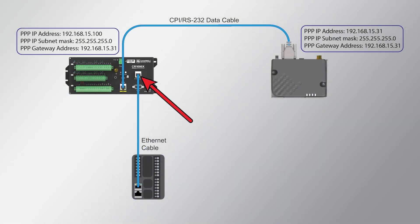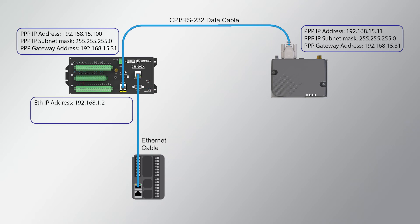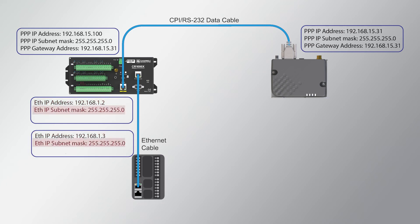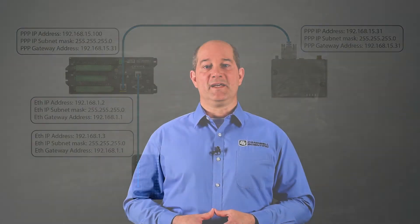Next, a different IP stack is configured on the CR1000X's Ethernet interface. The CR1000X is connected via Ethernet to a generic Modbus Programmable Logic Controller, or PLC. The CR1000X is given an address of 192.168.1.2, while the PLC is given 192.168.1.3. The subnet mask remains 255.255.255.0 for both components, and both are given a gateway address of 192.168.1.1. In this instance, the gateway address could be anything, as this network will not be communicating with any hosts outside the local network.